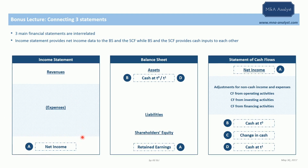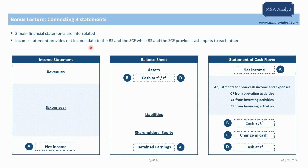In the statement of cash flows, net income goes at the top before we start making any adjustments. So from the income statement we get the net income for the financial year, add it to the retained earnings in the balance sheet, and put it at the top of the statement of cash flows. The income statement is linked to both statements through the net income figure.